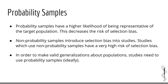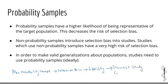Non-probability samples, on the other hand, introduce bias into studies, and therefore studies which use non-probability samples have a very high risk of bias. As we said in the previous chapter, studies with a high risk of bias have low validity and therefore a high risk of making incorrect study conclusions. So in order to make valid generalizations about populations, you need to use probability samples.